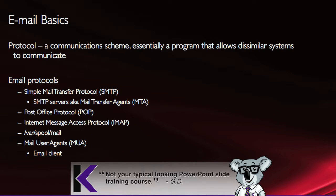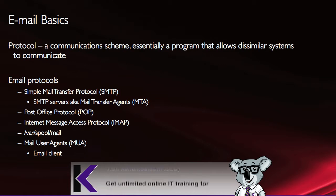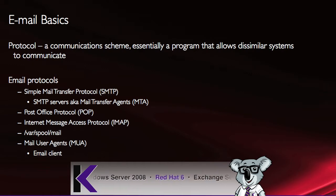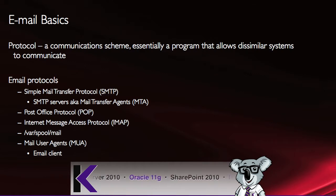Email protocols such as the SMTP protocol — Simple Mail Transfer Protocol — operates at TCP port 25 and is used to transfer the email from source to destination. It uses something called the Mail Transfer Agent, or MTA.